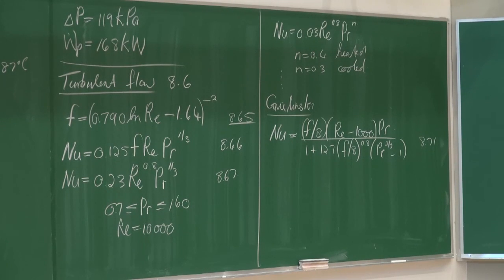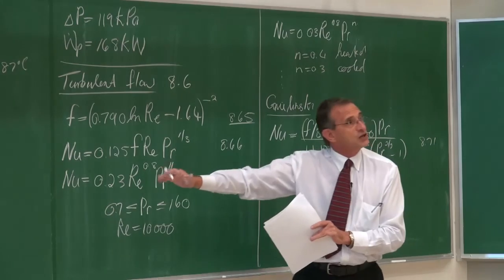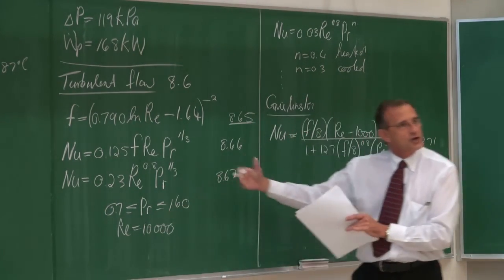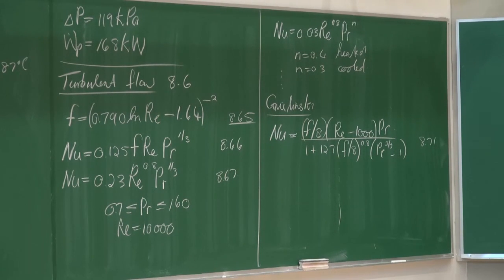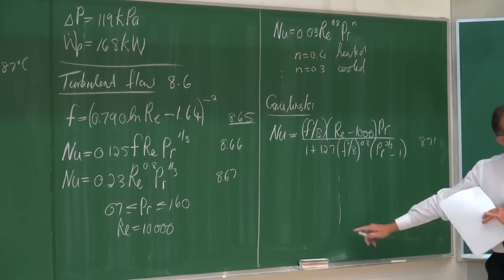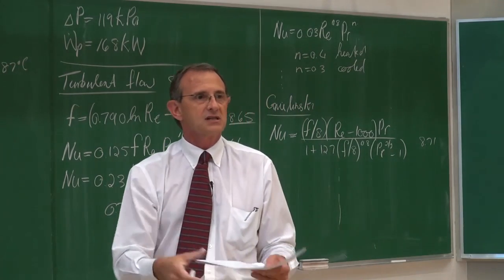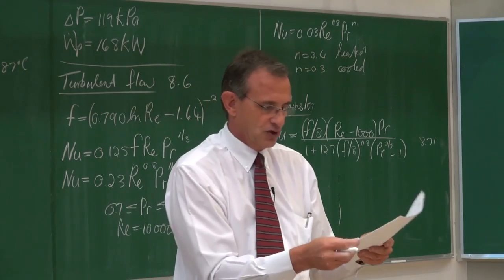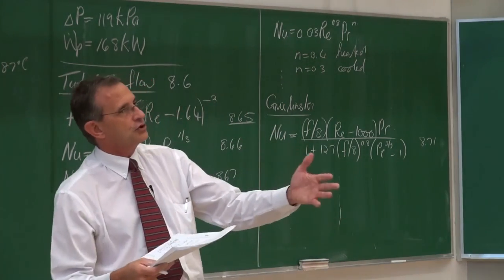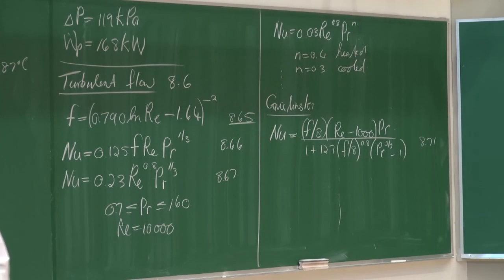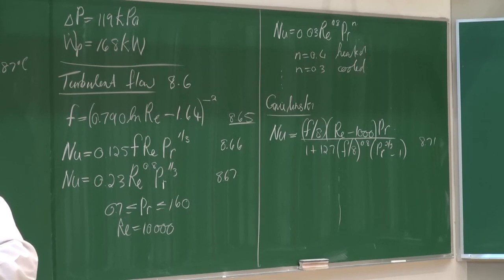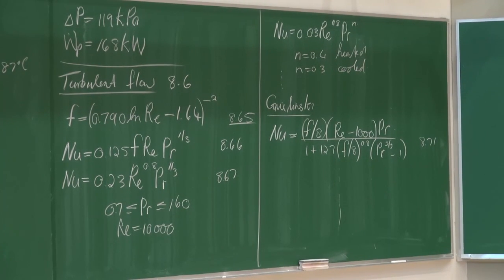When choosing which equation to use for turbulent flow in a tube: for industry requiring high accuracy, use the Gnielinski equation or the upcoming Meyer et al. equation. In this course, using one of the simpler equations is acceptable unless a more accurate solution is specifically required. Ladies and gentlemen, thank you very much — that's the end of this lecture. Enjoy the rest of your day.